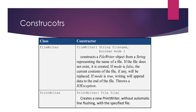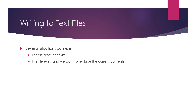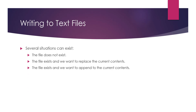We have three different scenarios for writing to files. First, the file does not exist — in that case, Java will create it for us. Second, the file exists and we want to replace its current contents — we set the boolean mode to false. Third, the file exists and we want to append to it — we set the boolean mode to true, which adds to the end of that file.